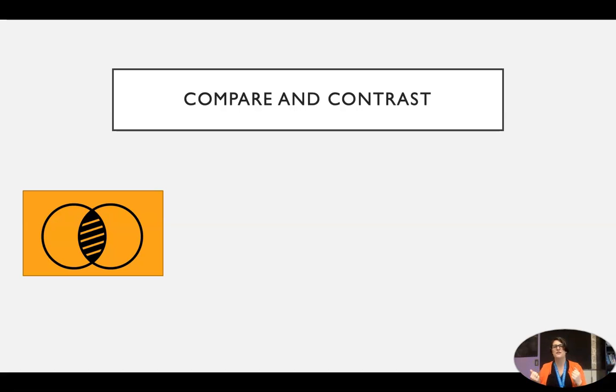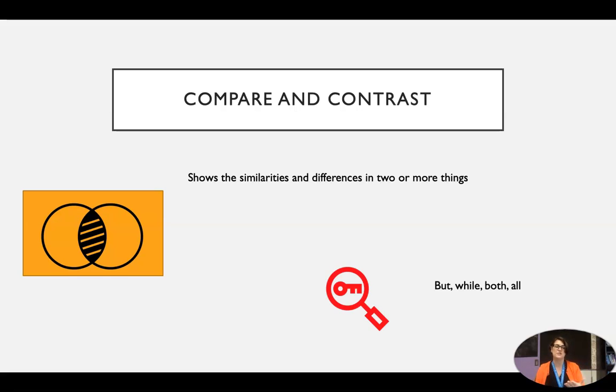Okay, we are on to compare and contrast, which we have the Venn diagram. We have the Venn diagram here because we are looking to see what is the same, that shaded area where it overlaps, and what is different in the separate sections of the Venn diagram in two or more things. We are using this to show what can be the same, what is different, and really understand things.